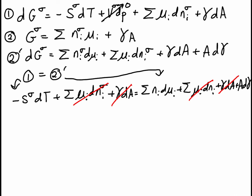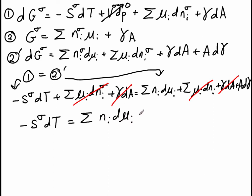Rewriting that simplified equation more neatly: minus S^σ dT equals the sum of N_i^σ dμ_i plus A dγ. Notice what we're trying to figure out is how surface tension responds when we change the composition of the system, and we have the A dγ term — that is our key to finding how surface tension changes.